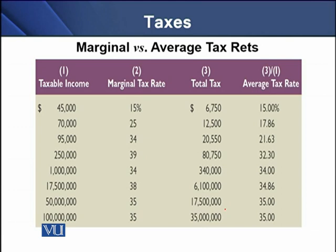On the screen you can see a comparison to understand marginal and average tax rate. In the first column, there is a taxable income of $45,000 and the tax rate is 15%. If we apply 15% to $45,000, the total tax comes to $6,750. To compute the average tax rate, we divide $6,750 over $45,000, which gives an average tax rate of 15%.